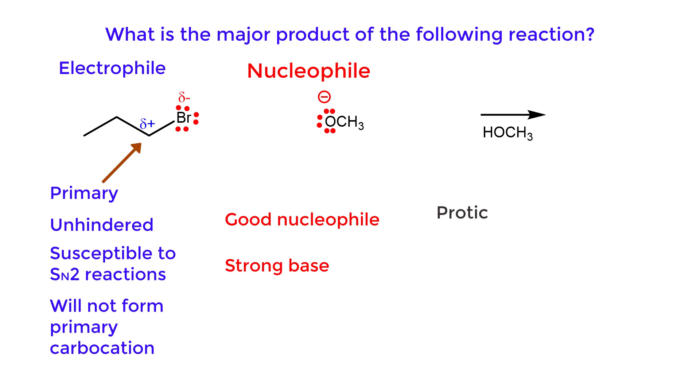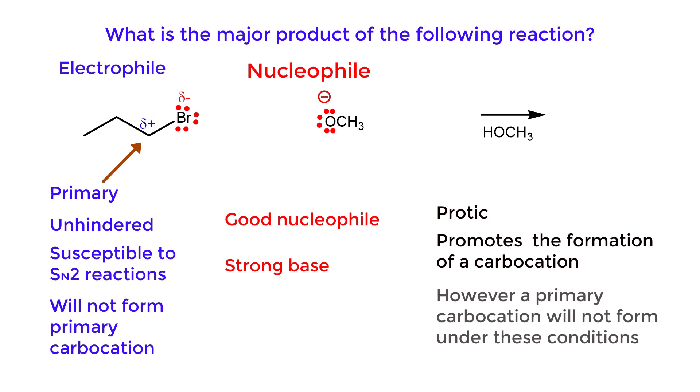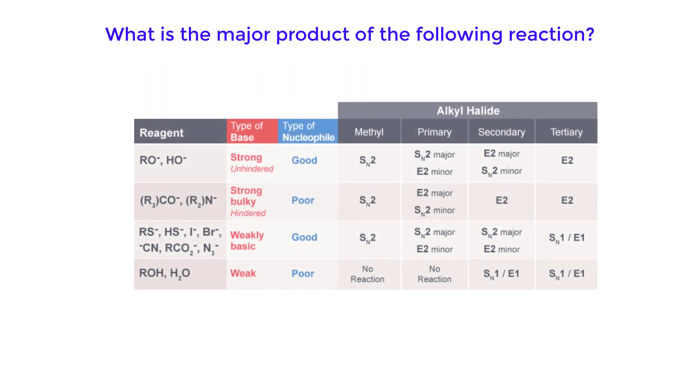The solvent is protic and promotes the formation of a carbocation. However, a primary carbocation will not form under these conditions. Looking at the substitution elimination chart for alkyl halides,